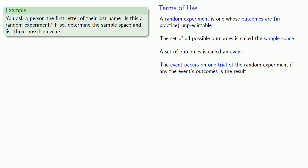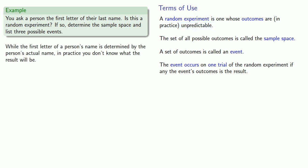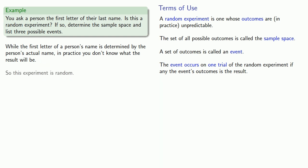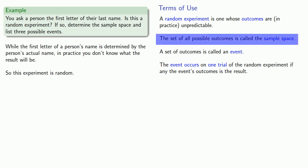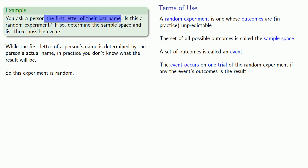This is probably one of the hardest ideas in probability to understand — a mathematician says that something is random if the result is, in practice, unpredictable. So while the first letter of a person's name is determined by the person's actual name, in practice you don't know what that result will be. So this experiment is a random experiment, and the set of all possible outcomes — the sample space — consists of the letters A through Z.